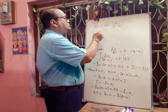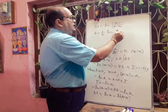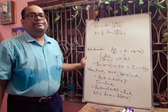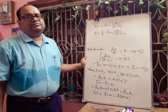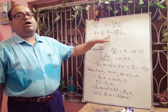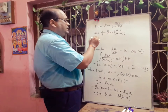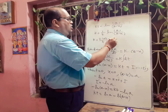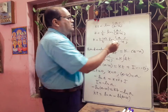So k equals (1/t) ln[a/(a minus x)]. This is the integrated form of the first order reaction. We can also change it to log base 10: k equals 2.303/t × log[a/(a minus x)]. These forms you have to remember.